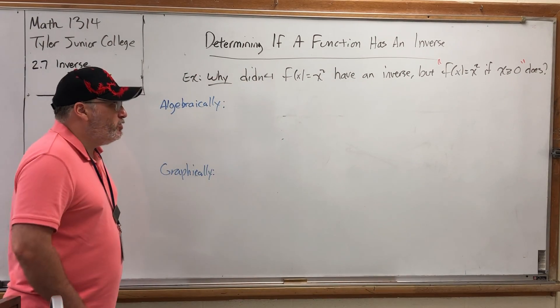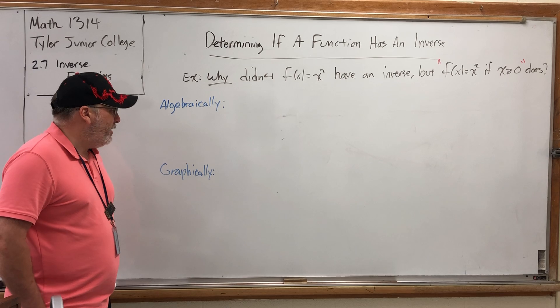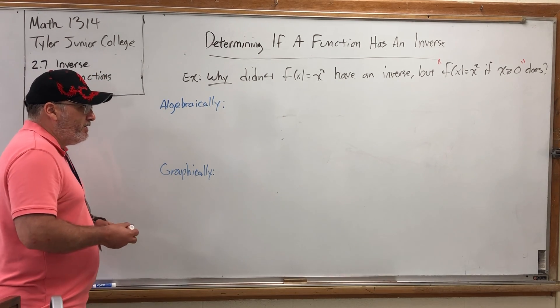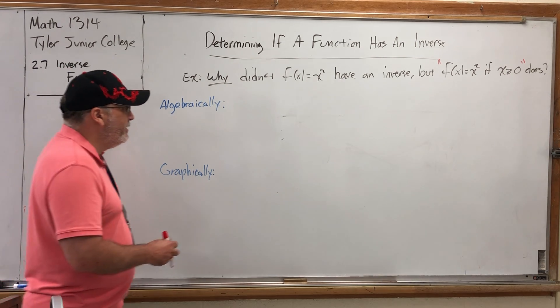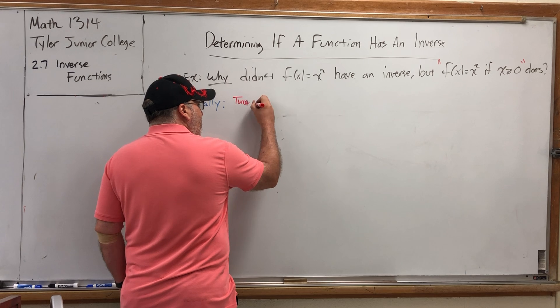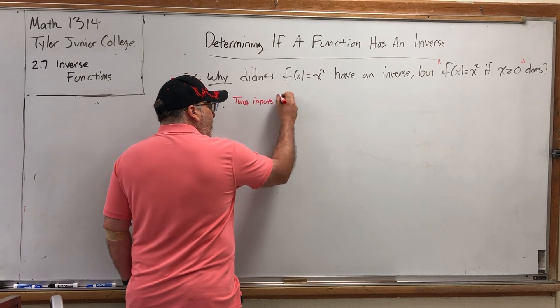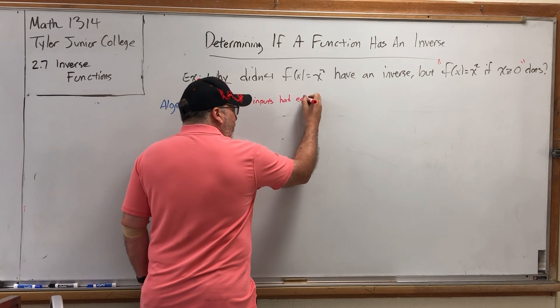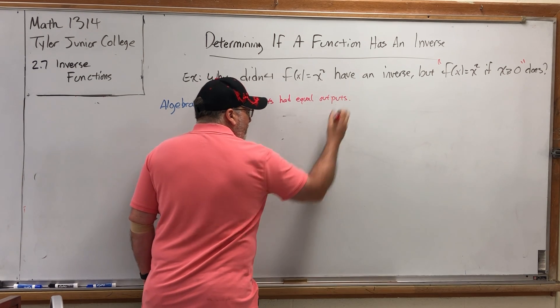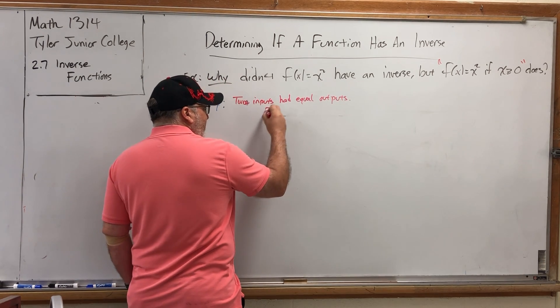There's a few reasons why. One of them is algebraic, the other two are graphical in nature. The problem with f of x equals x squared algebraically is two inputs had equal outputs.